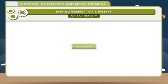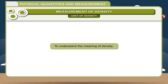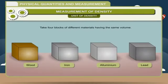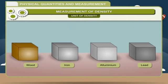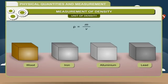Activity — To understand the meaning of density: Take four blocks of different materials having the same volume, weigh them, and compare their masses. Find the density of each using ρ = M / V, and list them in increasing and decreasing order of density. Also find out which material is the most dense.